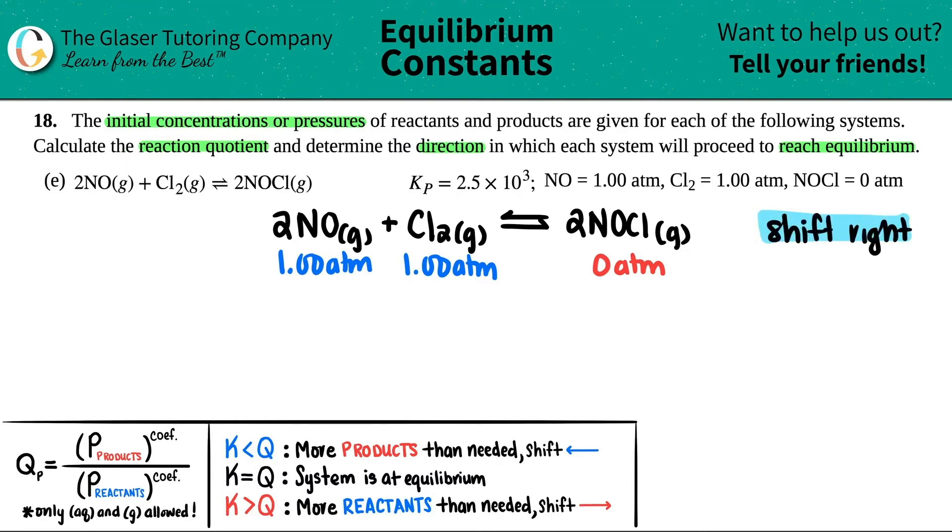Now all we've got to do is just calculate that reaction quotient, which is the Q. And I wrote down the formula here. We've done tons of problems figuring out how to make specific Q formulas. So let's get to it. So basically, remember, it's products over reactants. And each one of them is raised by their coefficients. But only aqueous and gases are allowed in this formula. But here, since we have all gases, all of these are going to be in the Q formula.